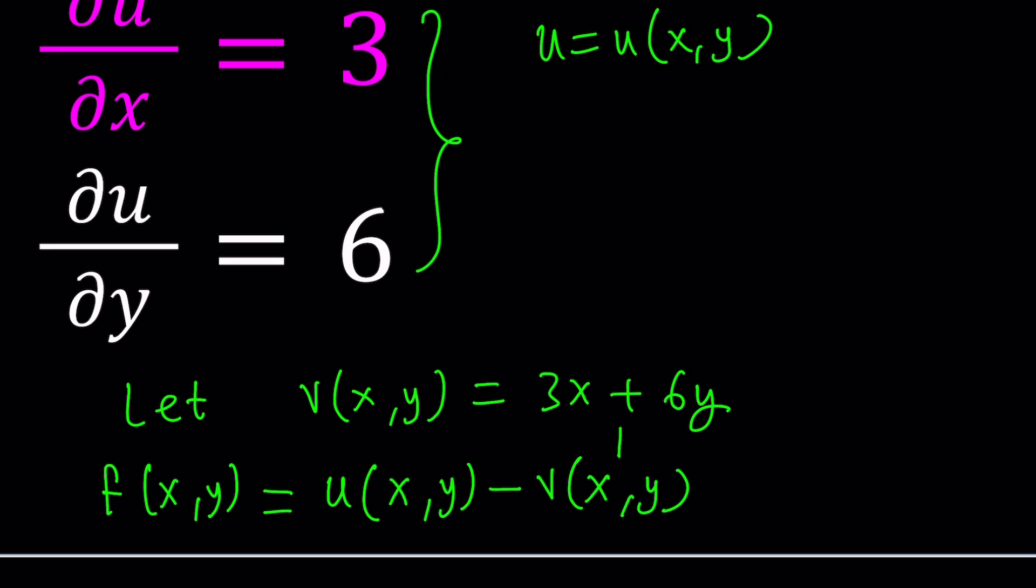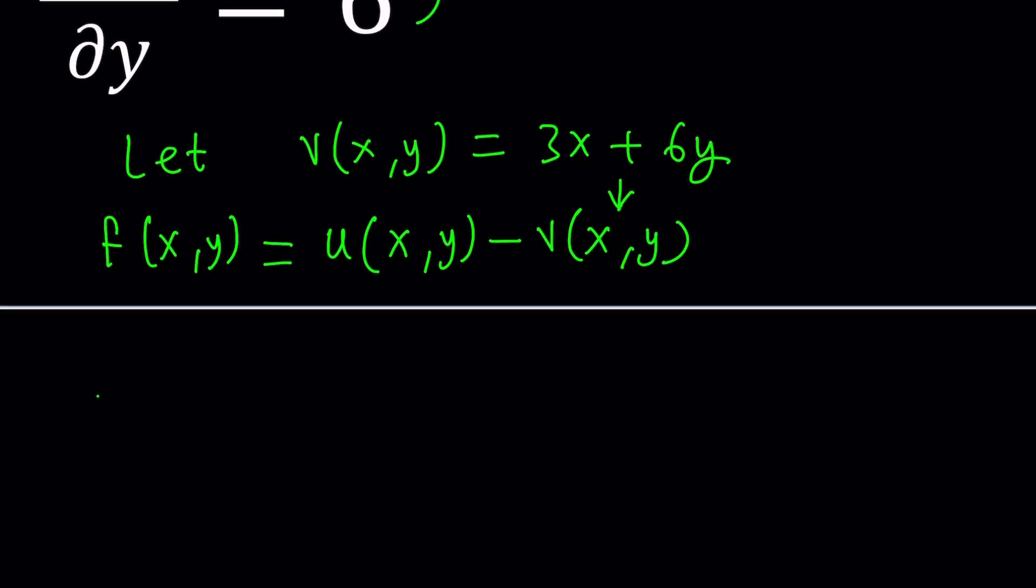Now, since we already know v(x,y), we can go ahead and substitute. So f(x,y) is going to be u(x,y) - 3x - 6y. Now, it's important because notice that 3x doesn't contain y and 6y doesn't contain x.